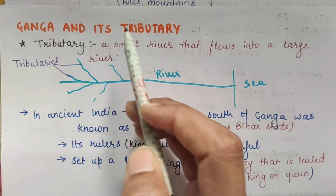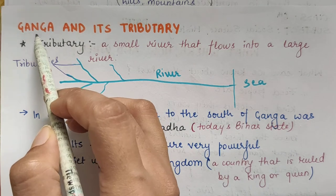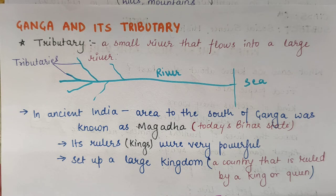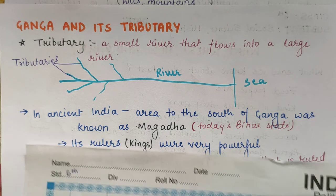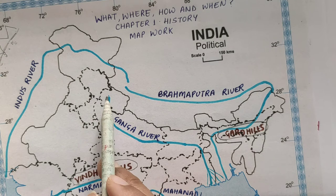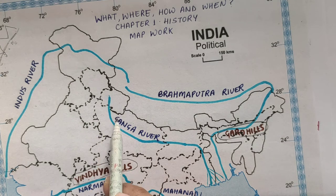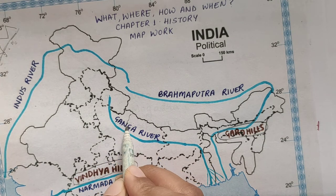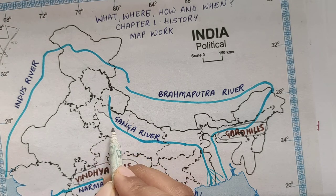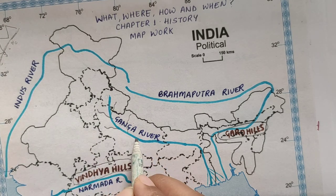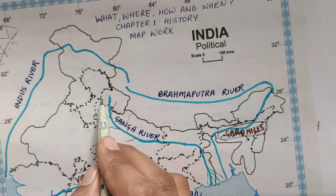Now, Ganga and its tributaries. Basically, Ganga is a river — the biggest river of our India — ye bahut jani mani river hai hamaari country ki. And here it is on the map. We are talking about this river and its tributaries. There are small rivers joining this Ganga river — these are called tributaries. They have different names also, and one famous one is Yamuna, which also joins with Ganga.